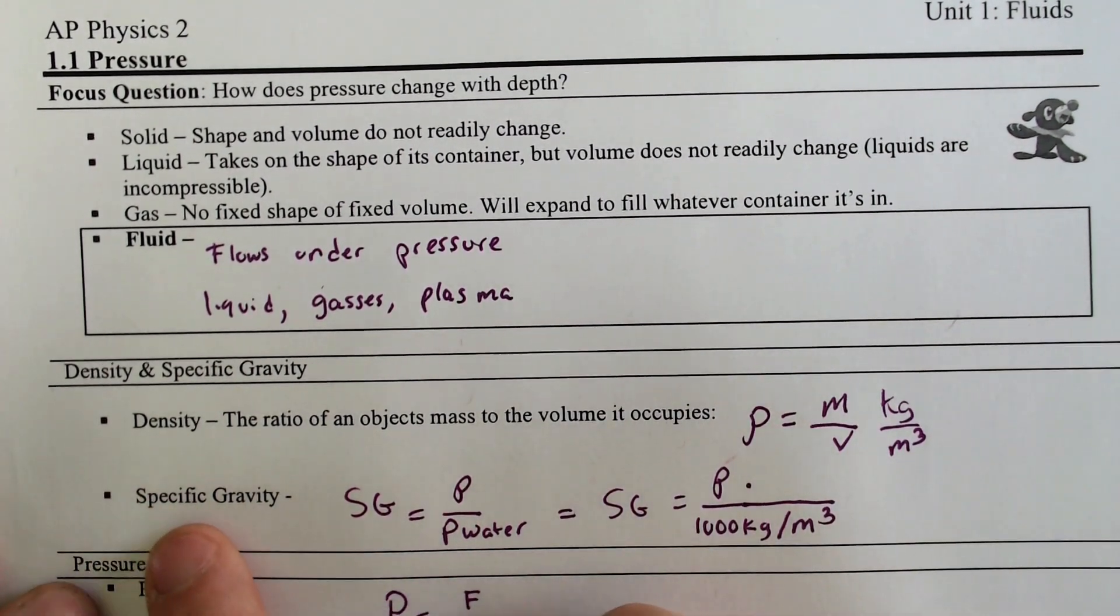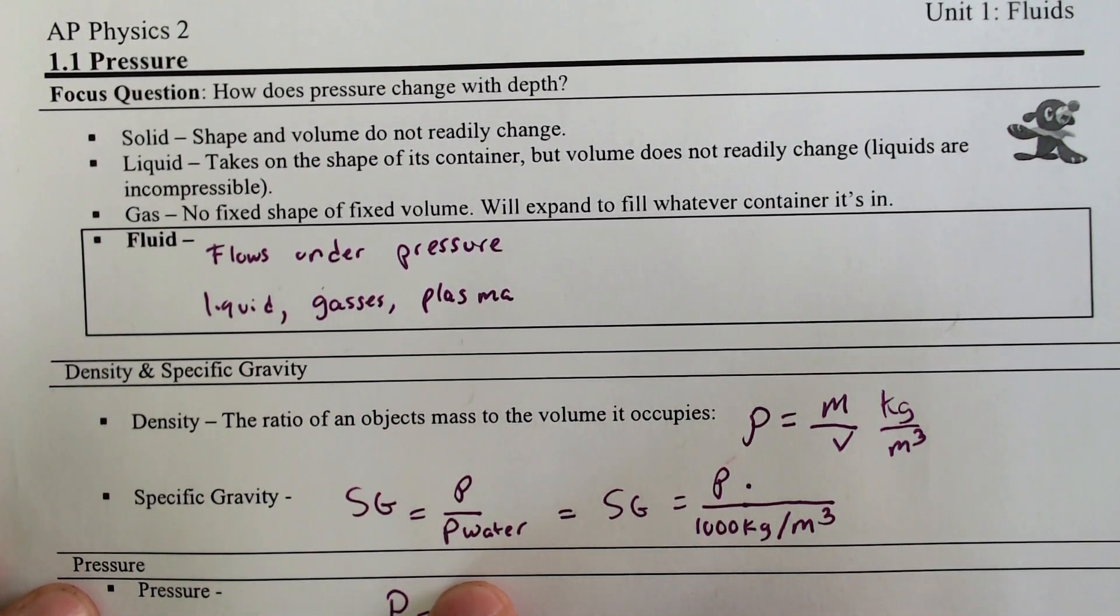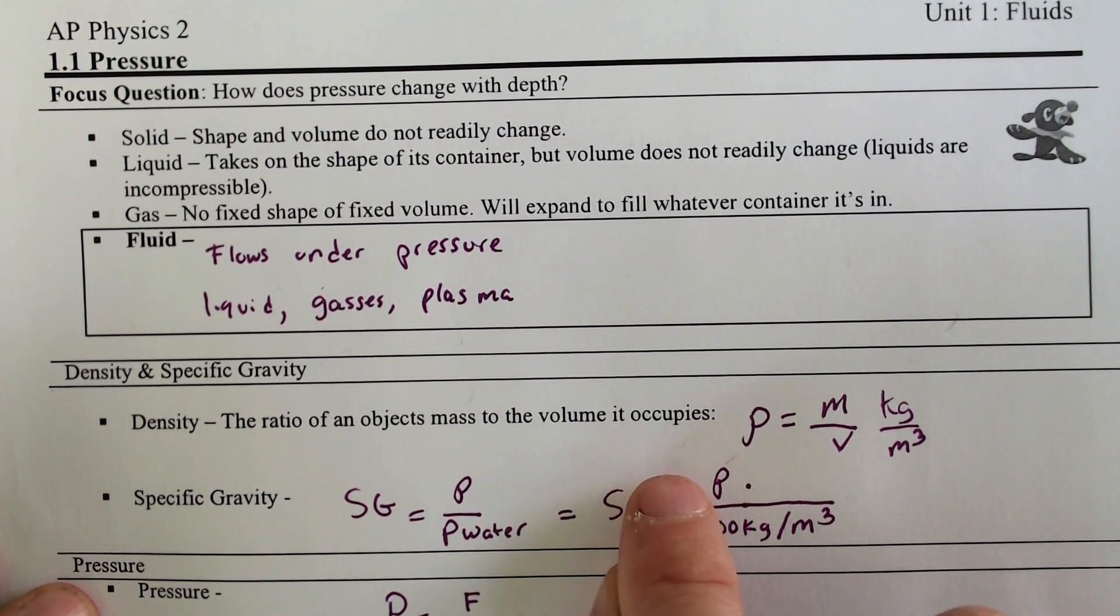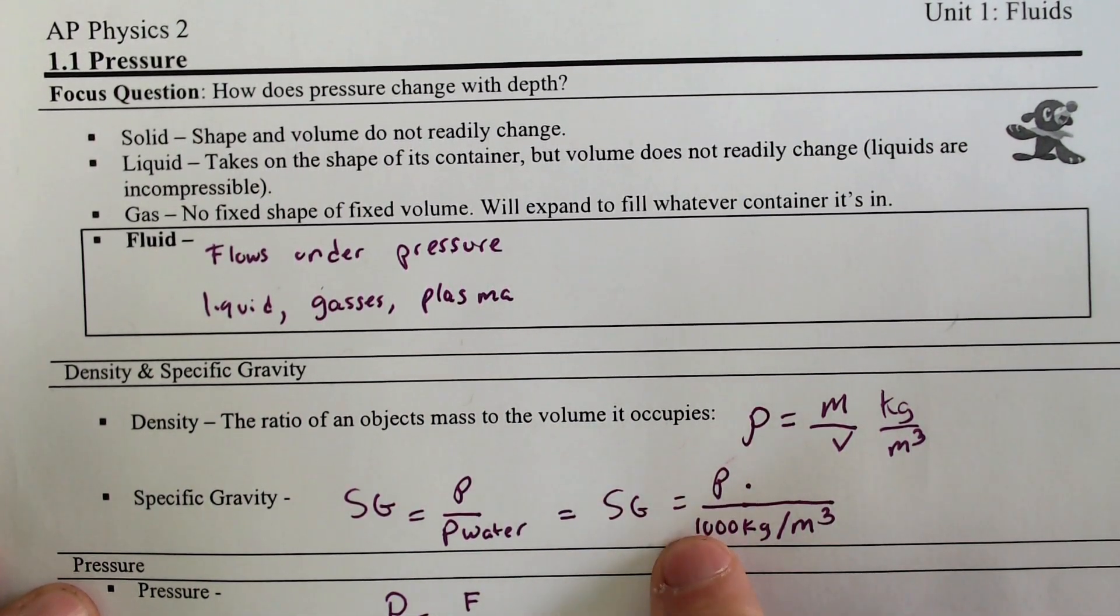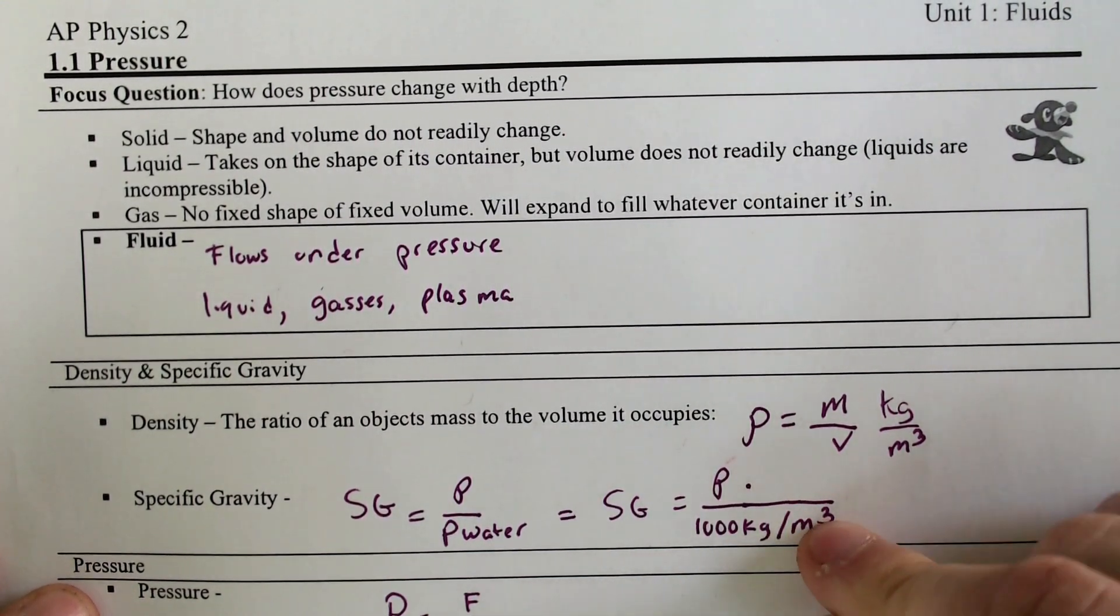Specific gravity is the next term. Specific gravity takes the density of any object and compares it to water. So you can find the specific gravity by taking rho, the density of your object, and dividing by the density of water, which is 1,000 kilograms per meters cubed.